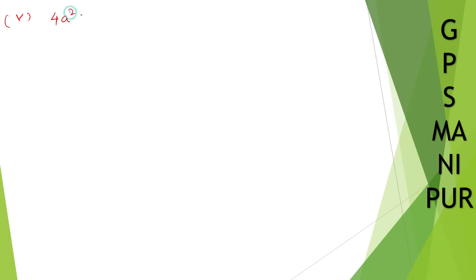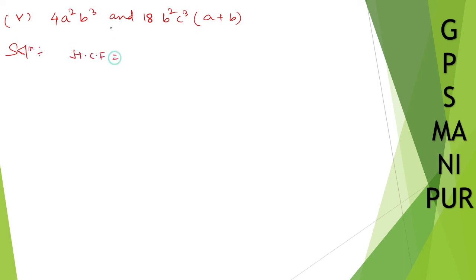Roman number five: we have 4a²b³ and 18b²c³(a+b). From 4 and 18, we can take 2 common (2×2=4, 2×9=18). A is not present in the second term, so we cannot take a common. B² is present in both, so we take b² common. So the HCF is 2b². That's all, thank you so much — we will meet in the next video.